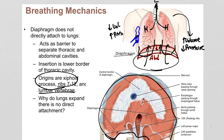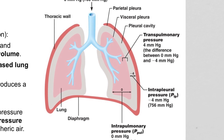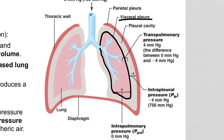In healthy lungs, they just keep rising and falling up and down the thoracic cavity. The lining of the lungs is called the visceral pleura — that's the outer border of lung tissue. The lining just inside the ribs — the chest wall — is called the parietal pleura. Technically there is a tiny space between them, called the pleural cavity.